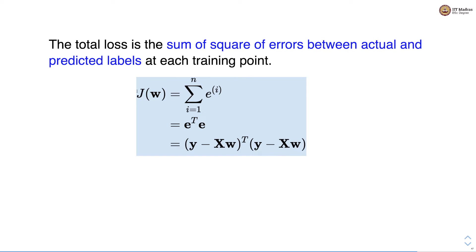We denote the total loss as J(W), which is essentially the sum of errors at each of the n training points. We can write this in a vectorized form as E transpose E, where error E is calculated as the difference between the actual label vector and the predicted label vector. We take the transpose of this difference and multiply it with itself.